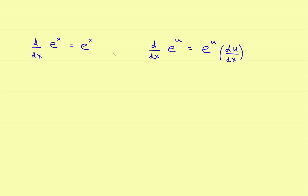The derivative of e to the x is a bit unique in that the derivative of e to the x is e to the x. So it's the only function that is its own derivative. Now let's take a look at why that is.